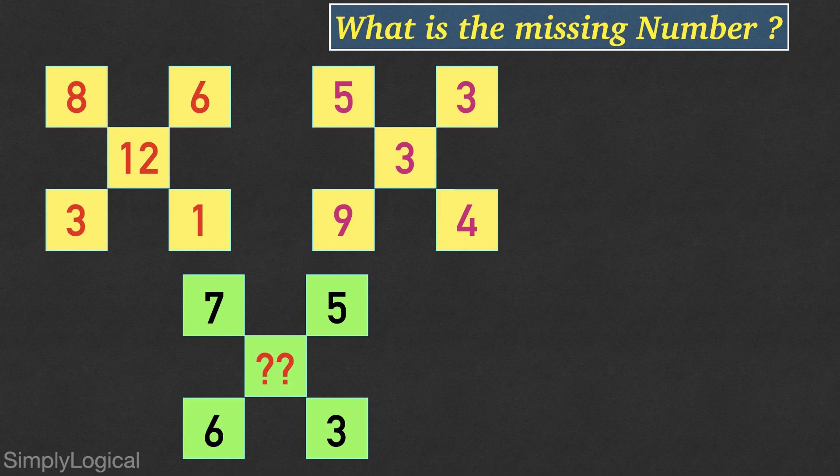There are 5 squares in each picture and the number in the center square is obtained with certain logic and it is formed using the surrounding numbers inside the square. Here our task is to find the missing number in the last figure.